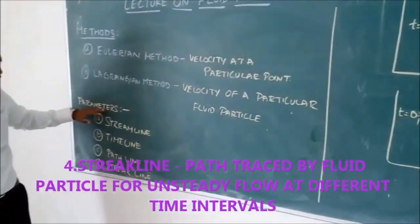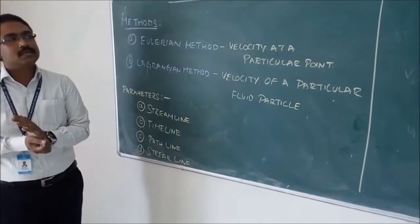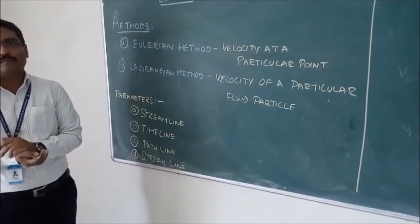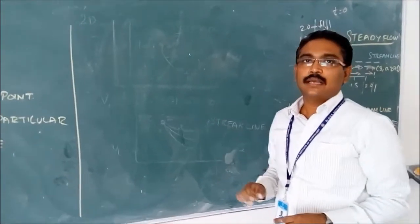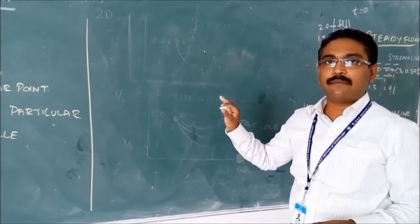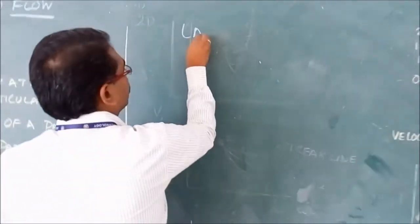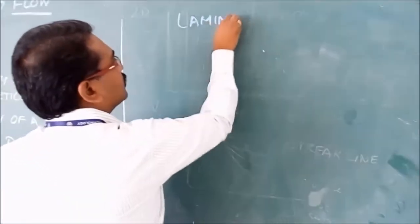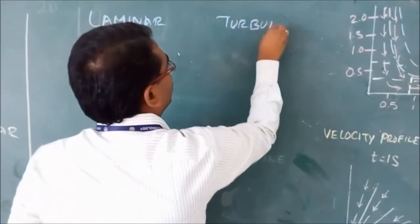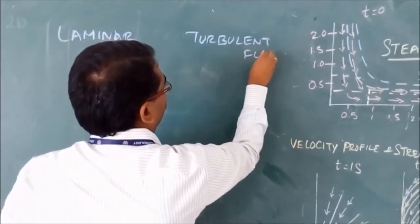Having covered all four concepts — streamline, timeline, path line, and streak line — we now understand steady and unsteady flow. We move next to a related topic: laminar and turbulent flow.